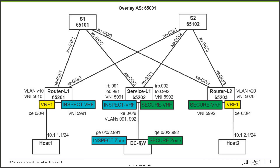Service leaf 1 in the middle has both the inspect VRF and the secure VRF. We'll configure the inspect VRF first, then the secure VRF. Host 1 will send traffic, filter-based forwarding it from VRF1 to the inspect VRF on service leaf L1, then to the firewall, back to the secure VRF on the service leaf, then to the secure VRF on router L2, then to VRF1, and finally to host 2.